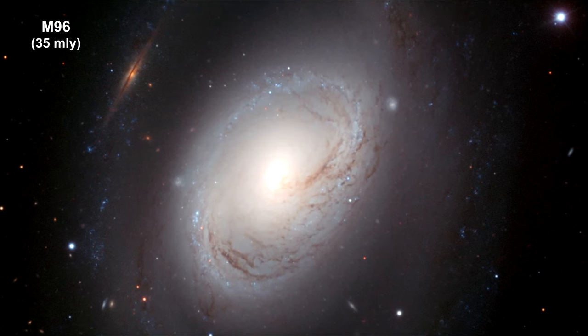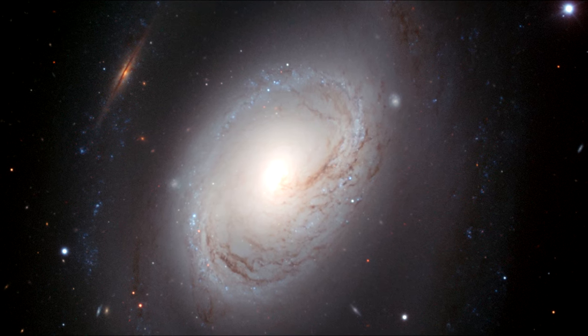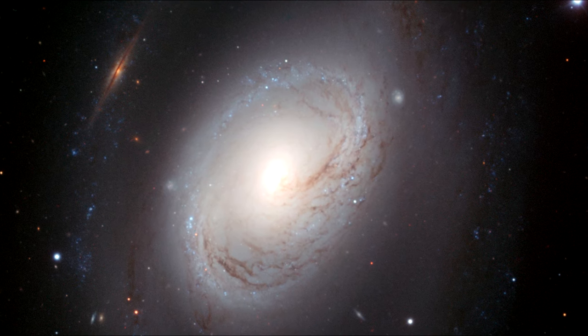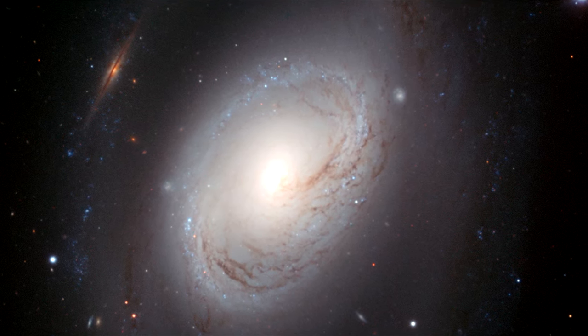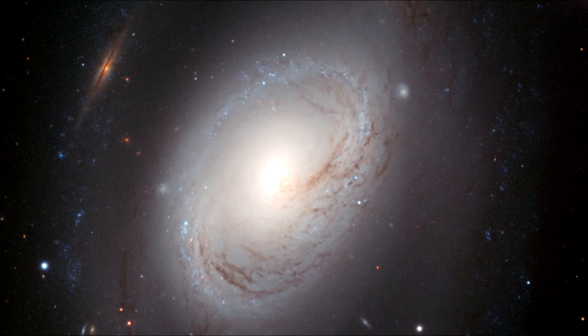M96's core is also displaced from the galactic center. Its gas and dust are distributed asymmetrically, and its spiral arms are ill-defined. But this portrait, taken with ESO's Very Large Telescope, shows that imperfections can be beautiful.